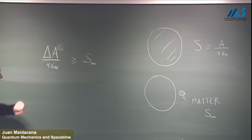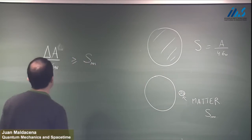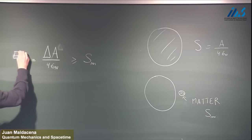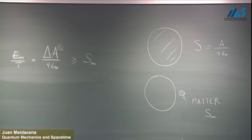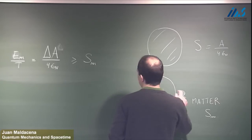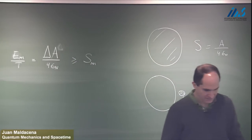This change in the area can be computed from Einstein's equations. It's related to the change in energy — the energy of the matter — divided by the temperature of the black hole. This is the first law of black hole thermodynamics: for small changes in the mass of the black hole, we have this first law. So if we increase the black hole mass by an energy E, the change in area is given by this formula. This translates into the condition that the energy of this matter has to be bigger than the entropy — it's a condition on the energy of matter.